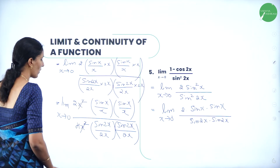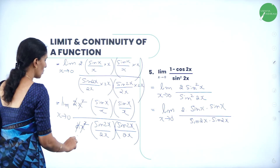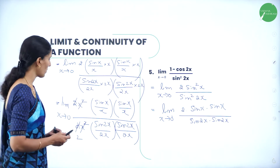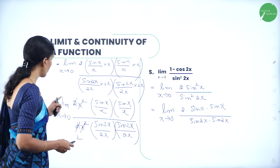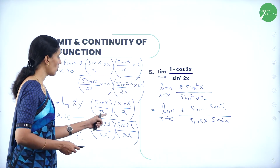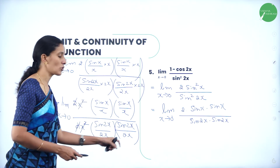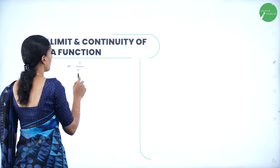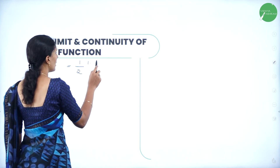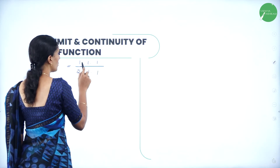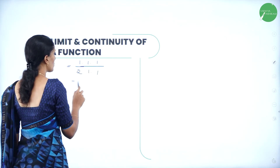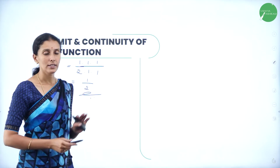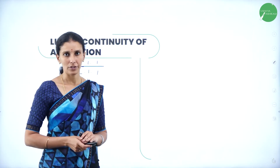The x² terms cancel, and 2/4 = 1/2 remains as a constant. Applying the limit as x→0 for each function: sin x / x → 1 and sin 2x / 2x → 1. So the result is (1/2) · 1 · 1 / (1 · 1) = 1/2. The limit of the given function is 1/2.